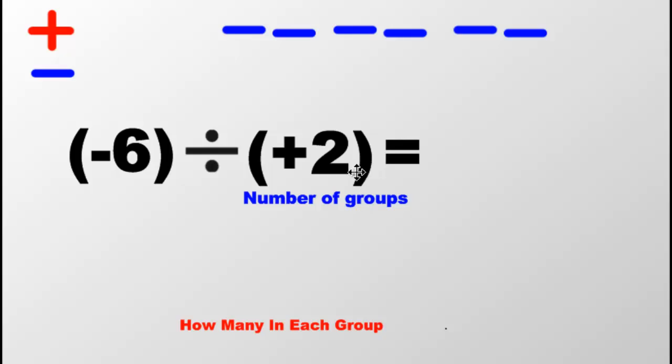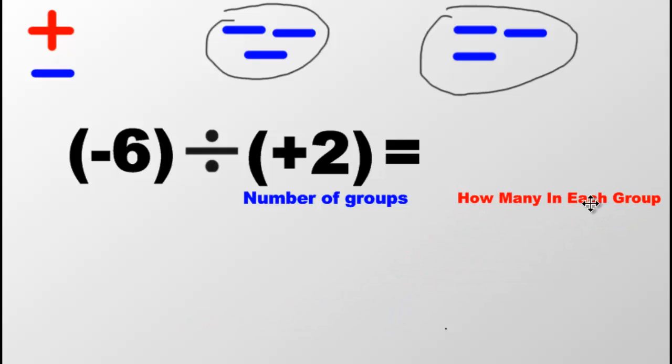So I have the number of groups to be two, which means if these were people, I would need to break them into two groups. Here is group A. This is soccer team number A, or basketball. This is three on three. Here is basketball, the second basketball team. Now my answer will be how many are in each group. How many do you see in each group? One, two, three. Negative three. That is my answer.